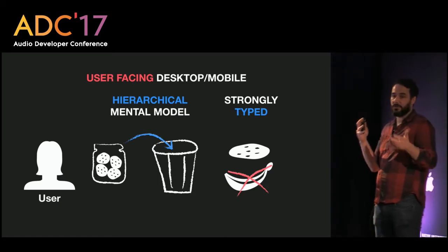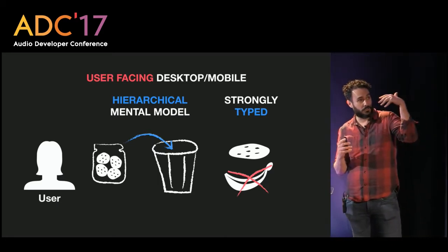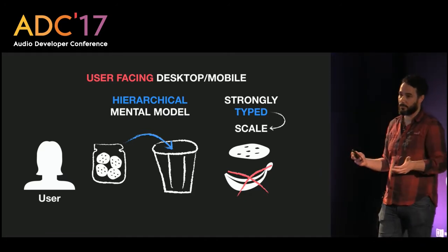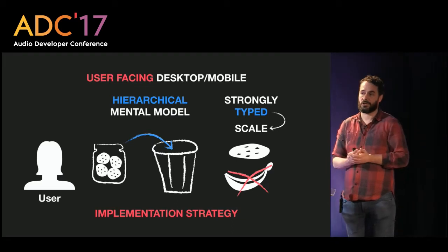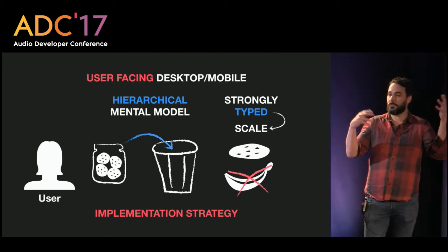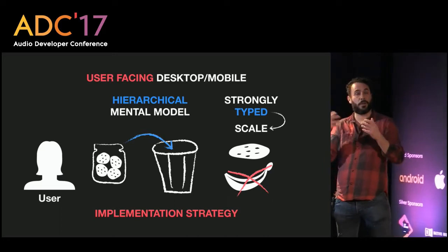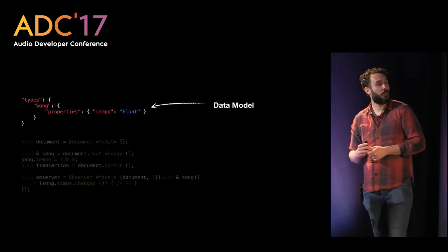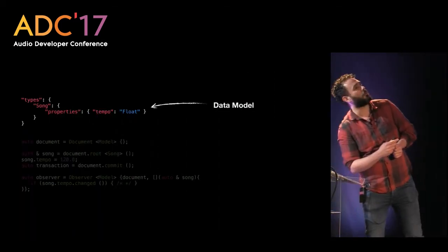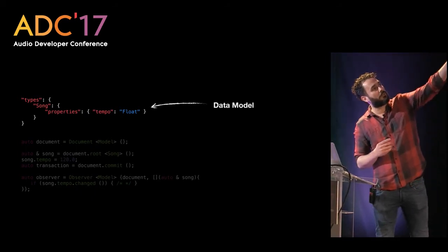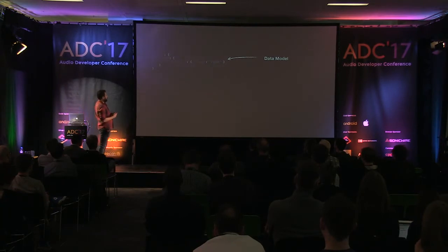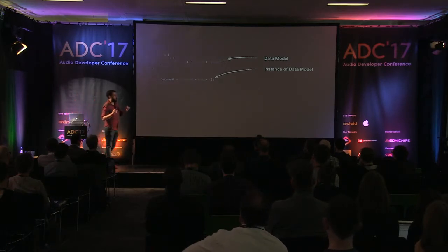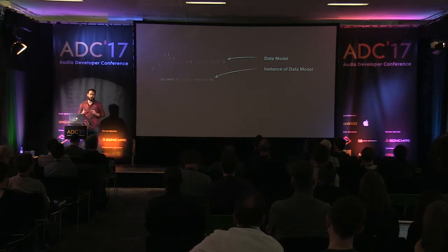For user-facing mobile or desktop applications, we can assume a hierarchical mental model: if a user puts a jar of cookies in the trash, they expect the cookies to be in the trash too. This leads to ownership as the most common relation. Strong typing — knowing that a cookie is not a banana — lets us scale data models, and a document is an instance of a data model, just as an object is an instance of a class.